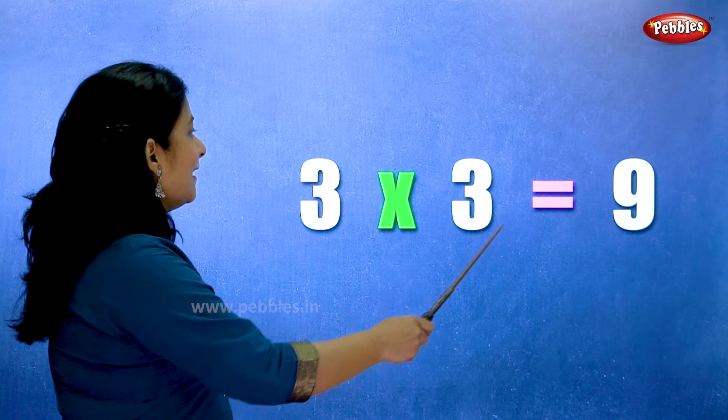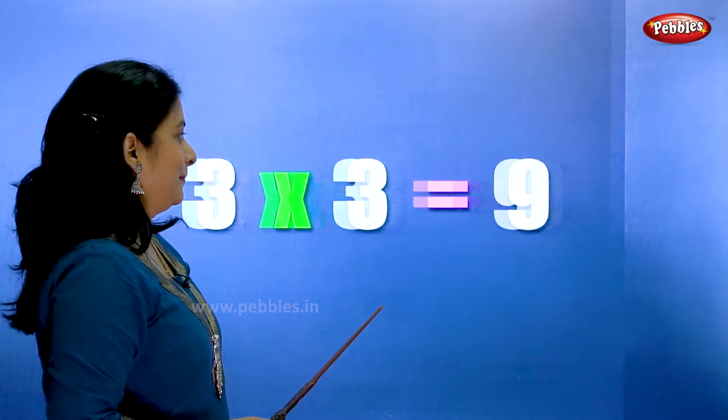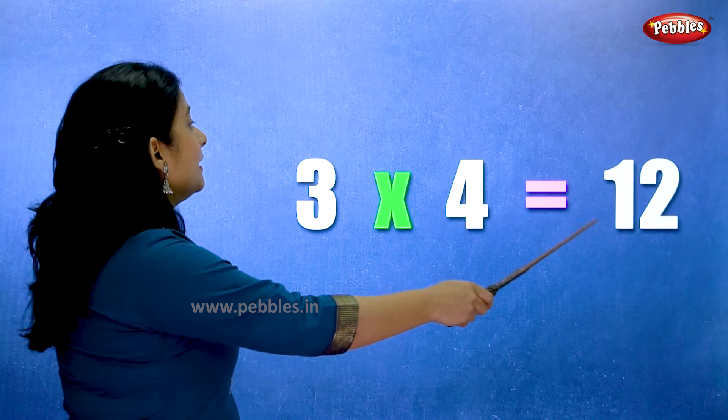Three threes are nine. Three fours are twelve.